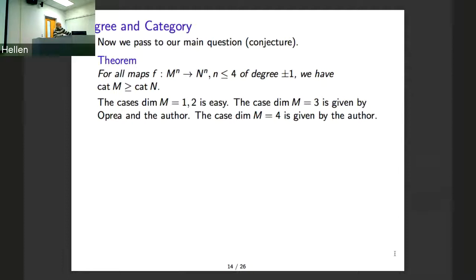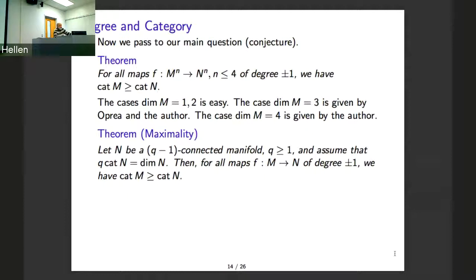Now my main question: if you have a map of degree one from M to N, is it true that cat(M) ≥ cat(N)? It is easy to prove in dimensions one and two, and also if the space is simply connected. Dimension four is also not so difficult. Now there is a theorem: if you have connected manifolds with this inequality and a map of degree one, then you have cat(M) ≥ cat(N) — category of M does not exceed cat(N).